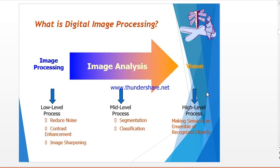In digital image processing there are three major processing levels. The first is low-level processing, which involves primitive operations such as image processing to reduce noise, contrast enhancement, and image sharpening. These techniques help us to easily analyze the image.